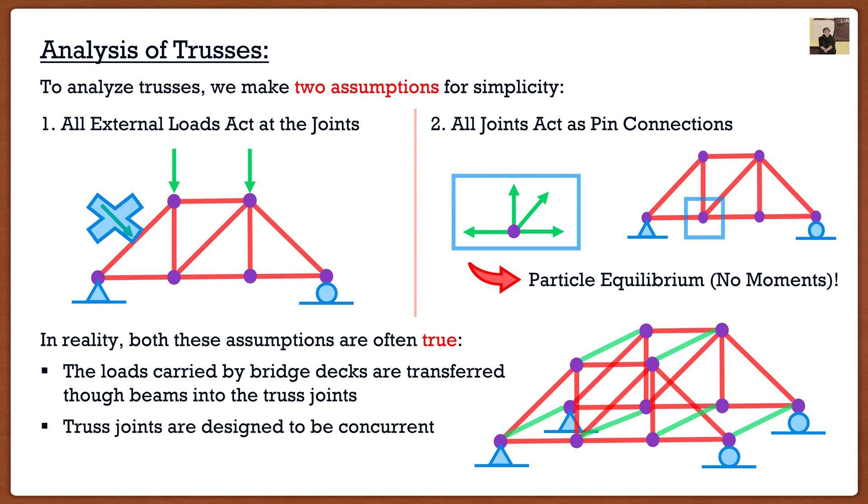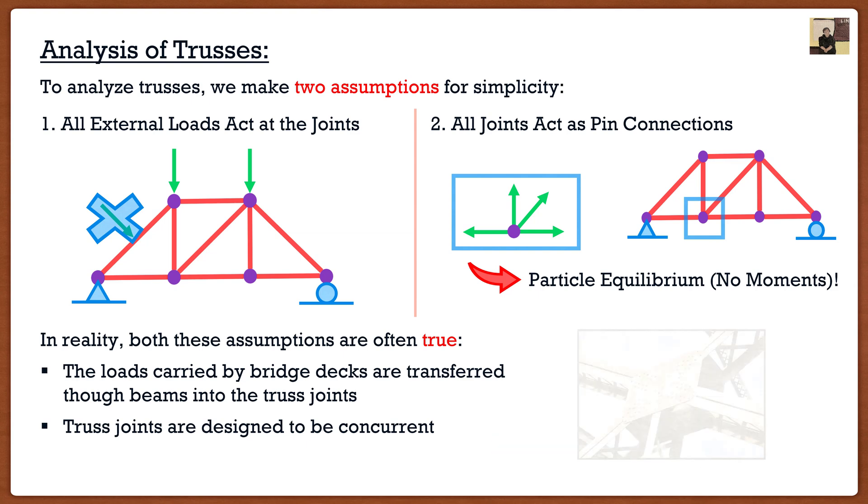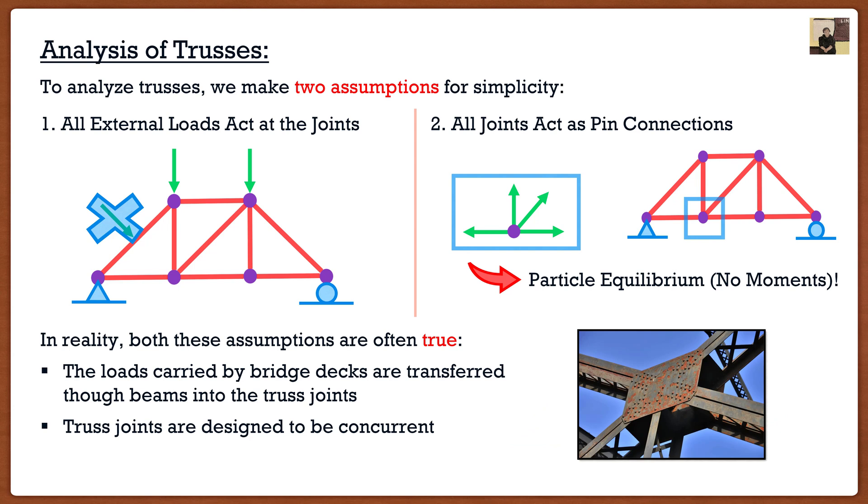Now the second one is that the truss joints are designed to be concurrent. This, as engineers, we get to pick. If we were to go look at any bridge that we want to, here's the one here in Edmonton, we can see that our joints are designed to be concurrent. Because if I were to draw some lines, they always intersect at that same point. So again, these are two assumptions we make, but as engineers, we can ensure that these assumptions actually hold true. That's the fun of design. As engineers, we can start to control things.